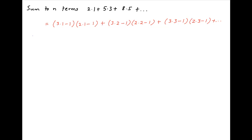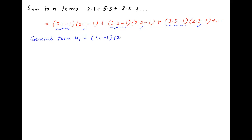Therefore, the general term or the rth term of the series, denoted by Uᵣ, is equal to the product of two components: the first component is (3r−1) and the second component is (2r−1).